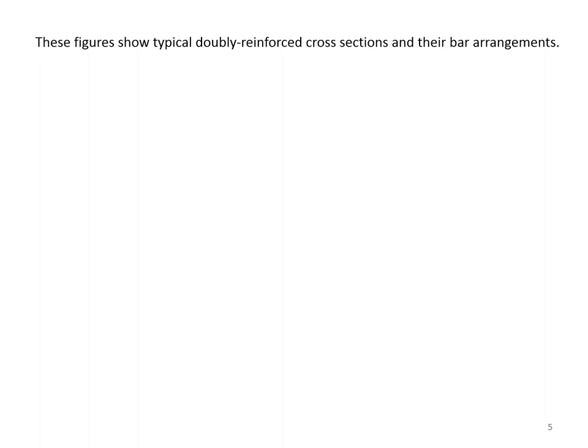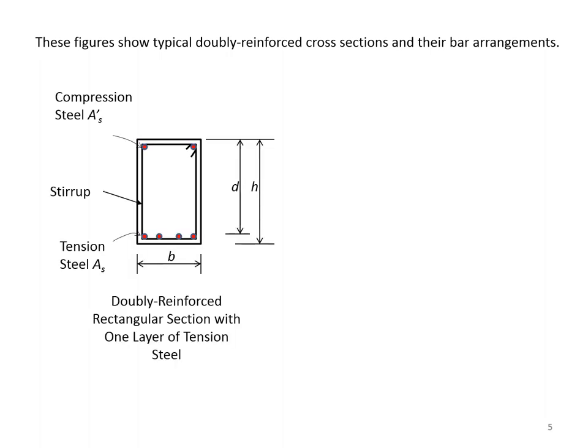These figures show typical doubly reinforced cross sections and their bar arrangements. This one shows a doubly reinforced rectangular section with one layer of tension steel.